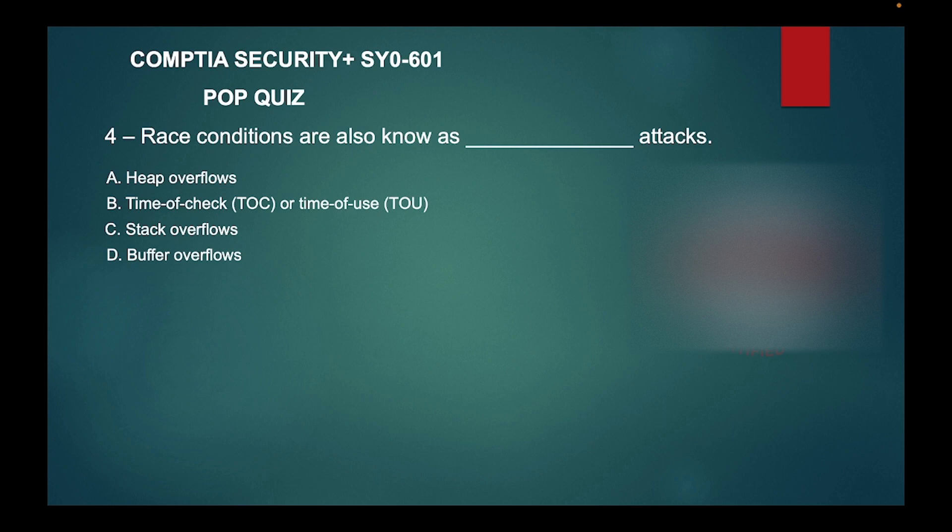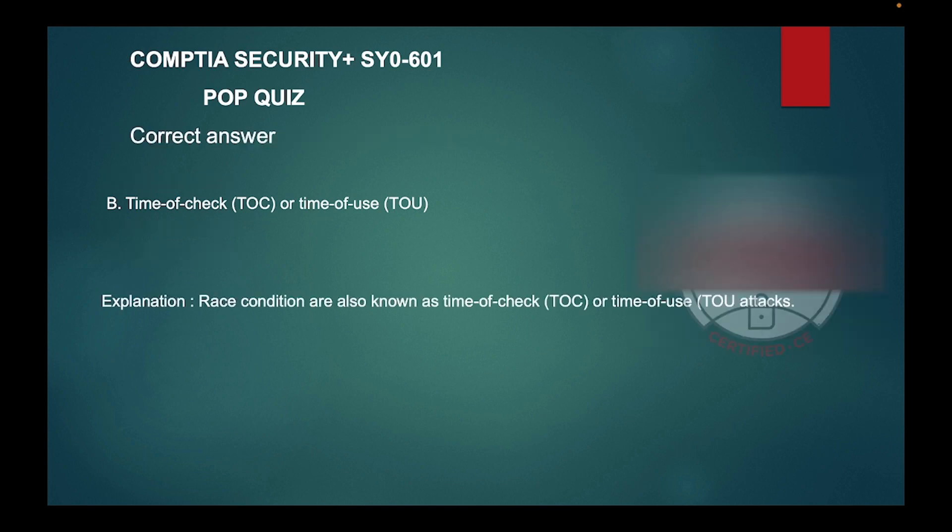Question four: race conditions are also known as blank attacks. A: Heap overflows, B: Time of check or time of use, C: Stack overflows, or D: Buffer overflows. The correct answer is B: Time of check or time of use. Race conditions are also known as time of check or time of use attacks.